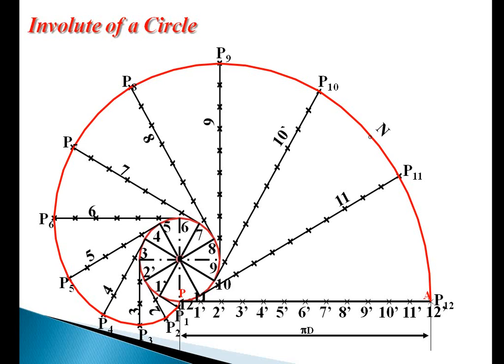Now we have to draw a tangent and a normal to the involute. I am locating one point on the involute. I am taking N as the point on the involute. Now we have to join N and C.